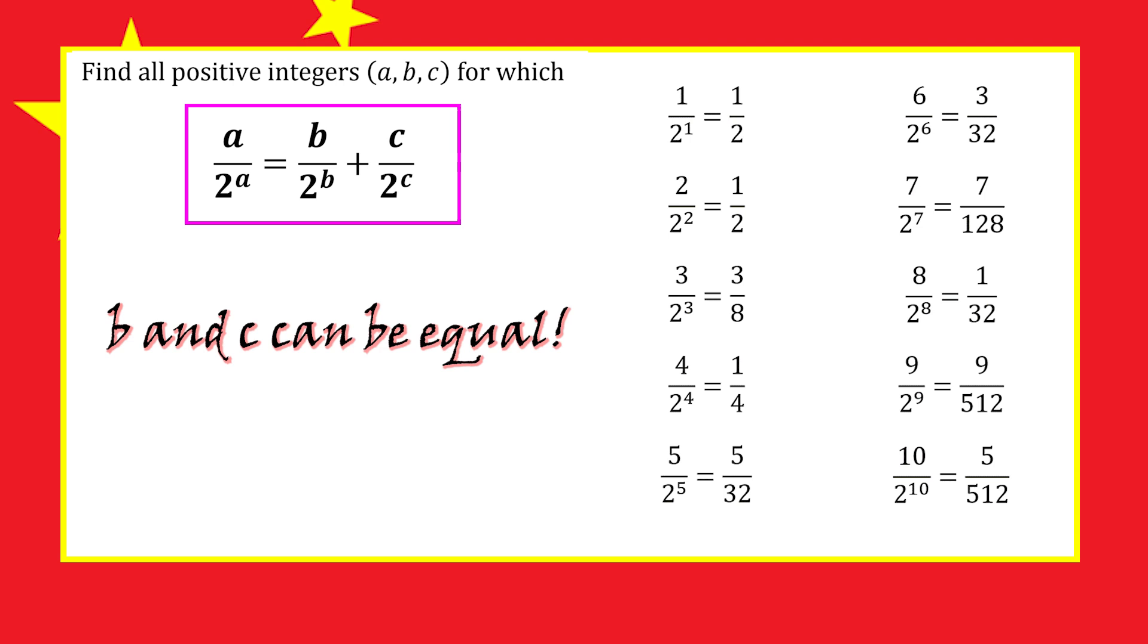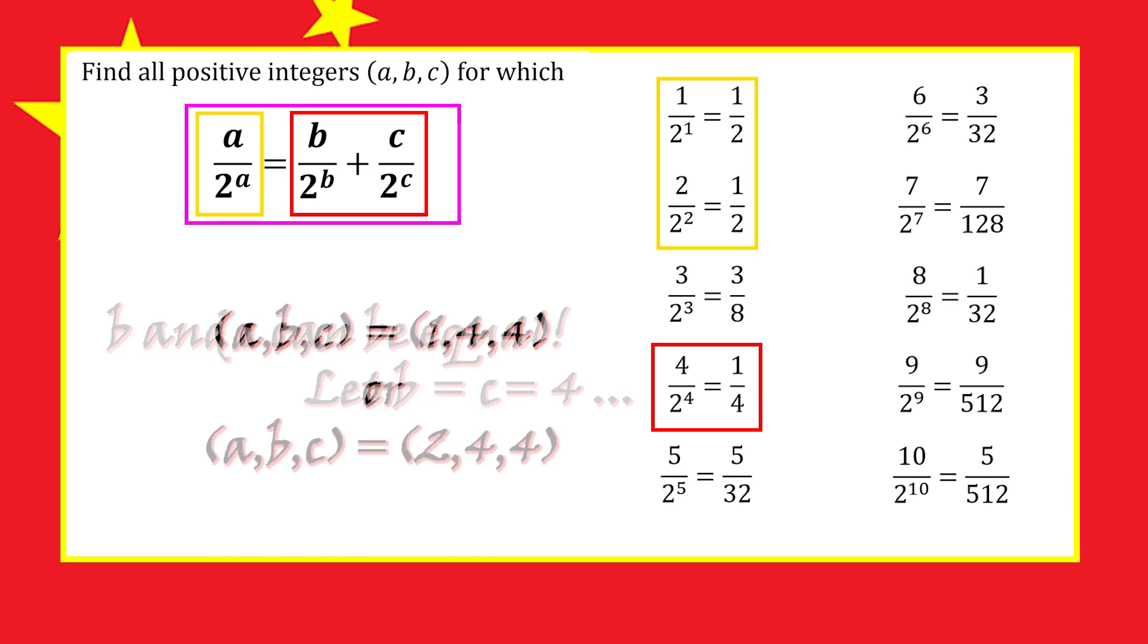If b and c are both equal to 4, when we add them together we get a half, so a could be either 1 or 2. These would be two solutions to the problem.